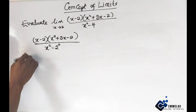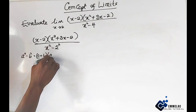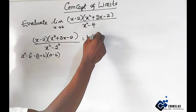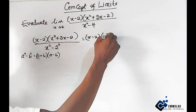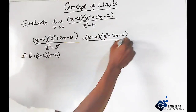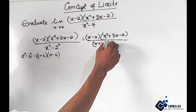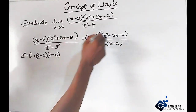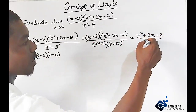Let us recall that a squared minus b squared equals a plus b into a minus b. Applying this rule to the denominator, we have x minus 2 times x squared plus 3x minus 2, all over x plus 2 into x minus 2. We can see we have the same factor in the numerator and denominator, so we can eliminate it. We are left with x squared plus 3x minus 2, all over x plus 2.